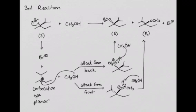Again, because attack from the front or the back of the planar carbocation is just as likely, we will get an equal mixture of both the S and the R products. This is called racemization, meaning that we end up with a racemic mixture, a one-to-one mixture of both enantiomers.